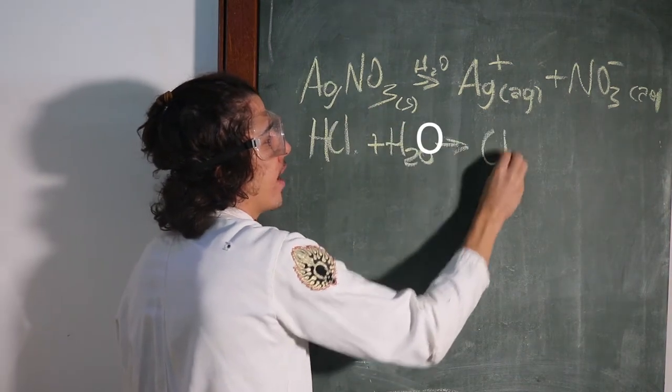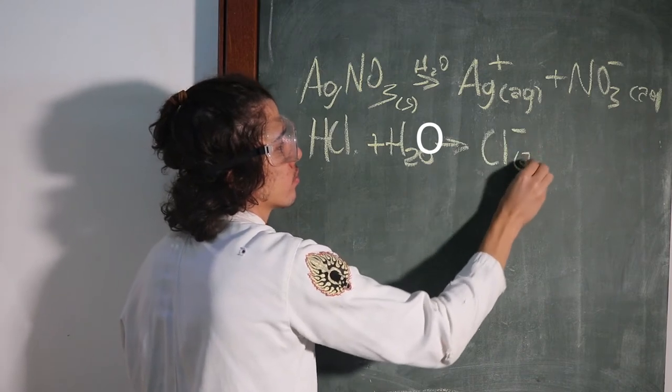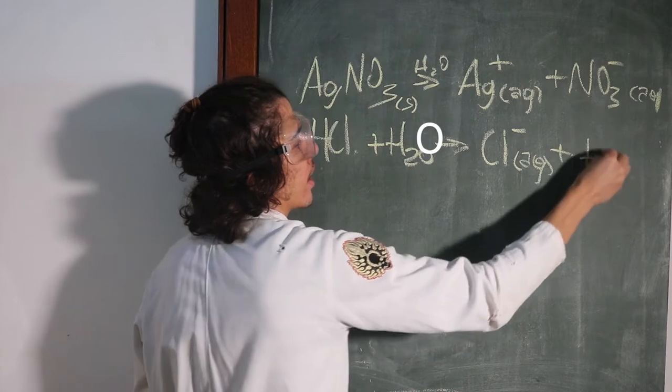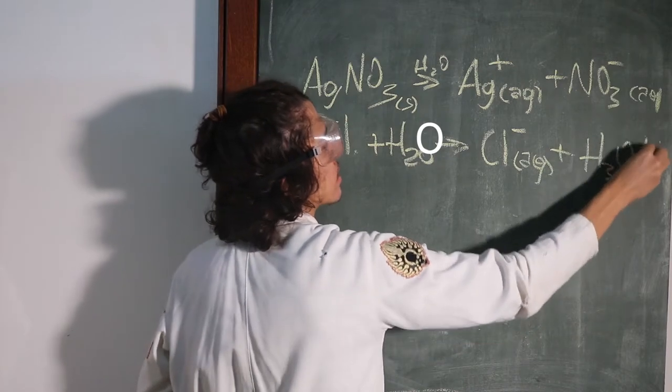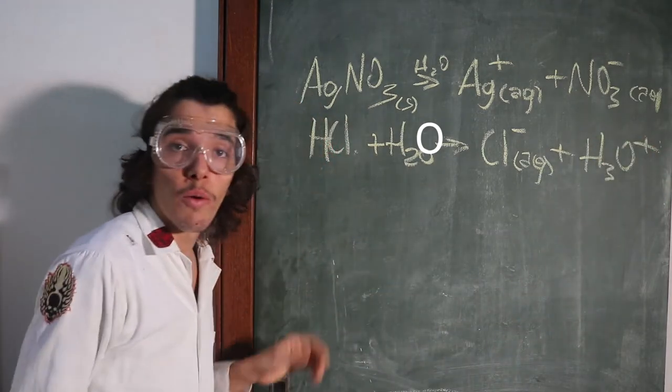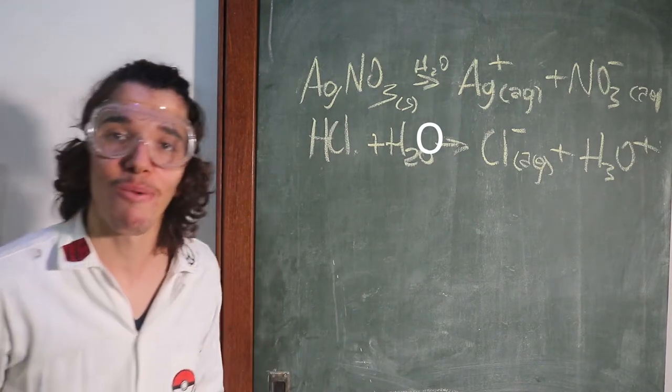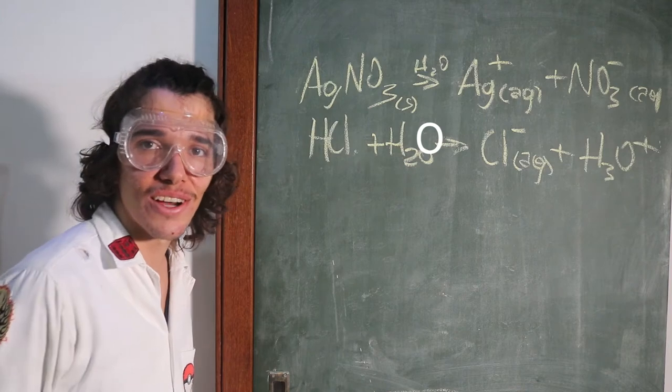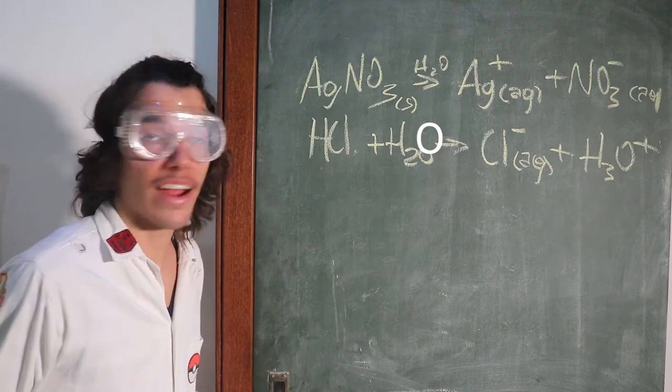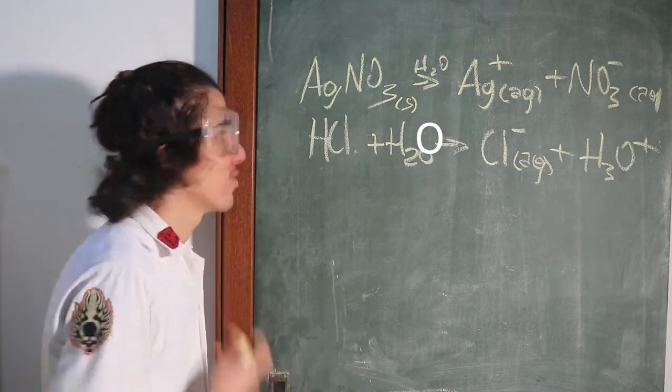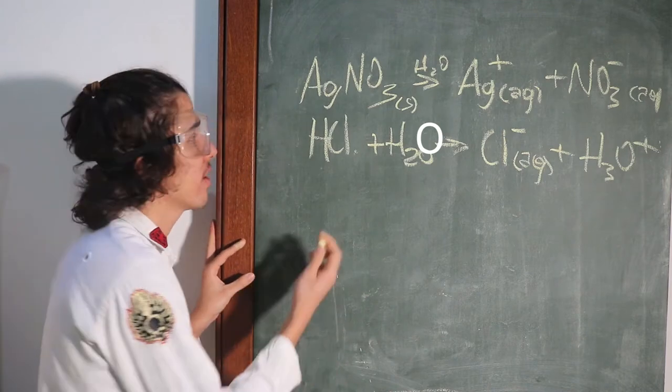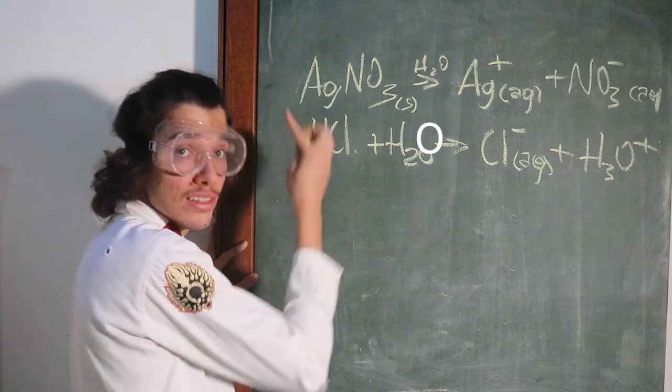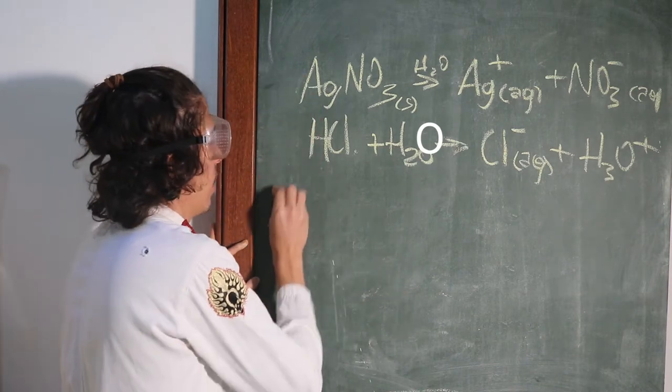And then if we pour a bit of hydrochloric acid in water plus water, we're gonna get some chloride aqueous plus some H3O+ plus some water, acidic water. Hydronium, I don't think that it's the right word in English so I don't care.